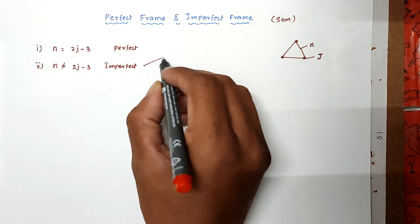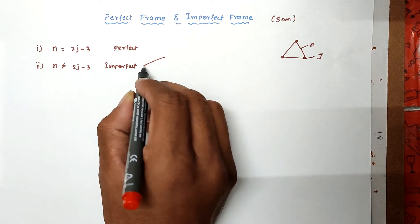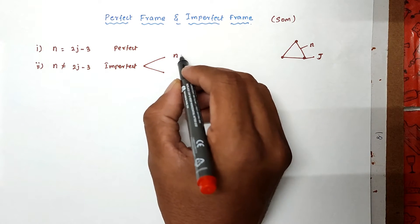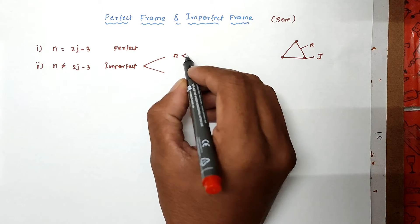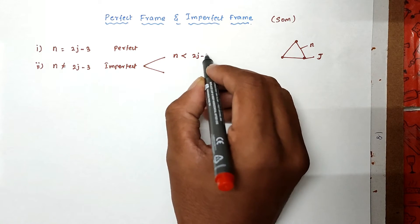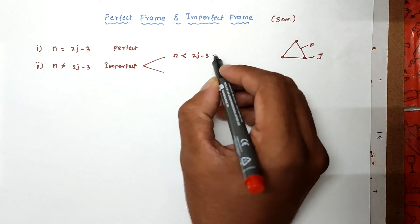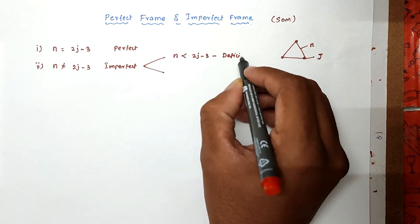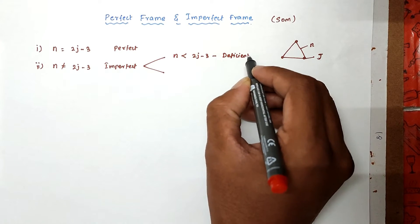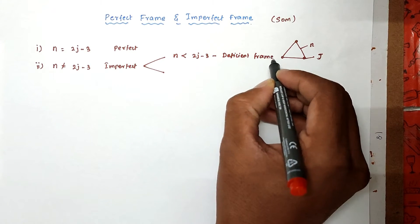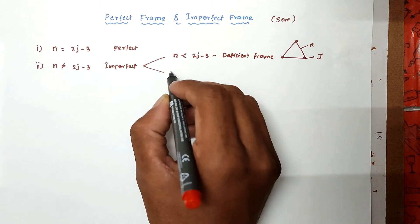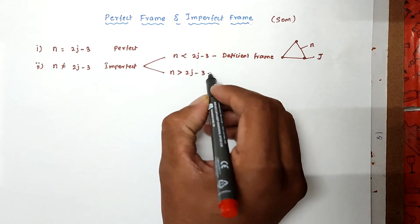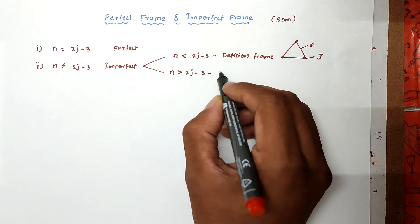There are two types of imperfect frames. If n is less than 2j minus 3, that is called a deficient frame. If n is greater than 2j minus 3, that is called a redundant frame.